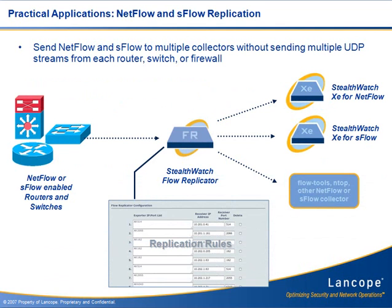The most common use of the Flow Replicator is in replicating UDP-based NetFlow and SFlow. If you have more than one NetFlow or SFlow collector technology, or you're wanting to virtualize your NetFlow collection behind a single virtual IP, the Flow Replicator is perfect for the job. You send all your UDP to the IP of the Replicator, then configure rules within the Replicator to further distribute as needed.